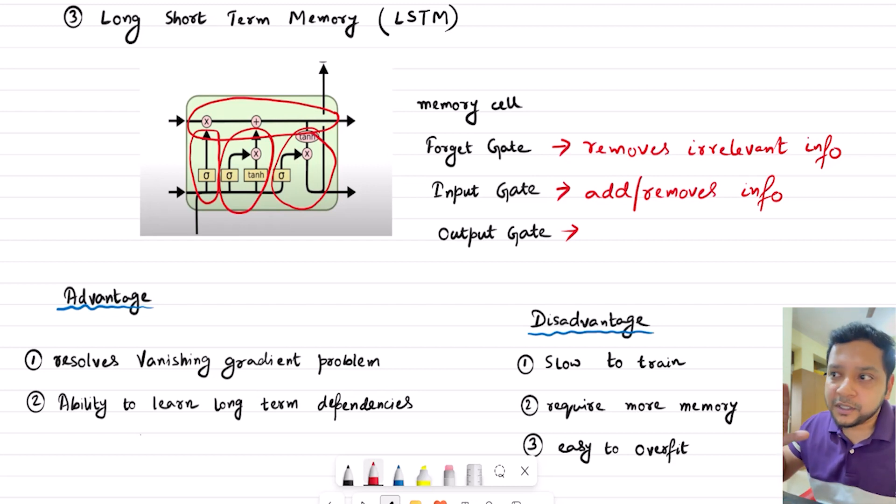Previously I mentioned that RNN has a problem of vanishing gradient if the architecture is too large, meaning that the weight updation is not taking place. LSTM has come into the picture and it resolves this vanishing gradient problem. And LSTM has the ability to learn long-term dependencies.